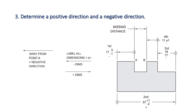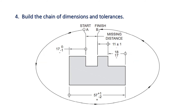Now build the chain of dimensions. The chain starts from the origin point A, marked with a circle and arrow. The 17 dimension starts there, then the 15 starts with a circle and arrow on the left side and goes towards the right side. The 17 goes from right side to left side in the negative direction, and the 11 also goes from right side to left side in the negative direction.